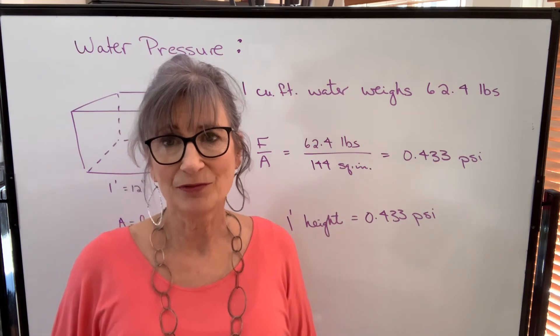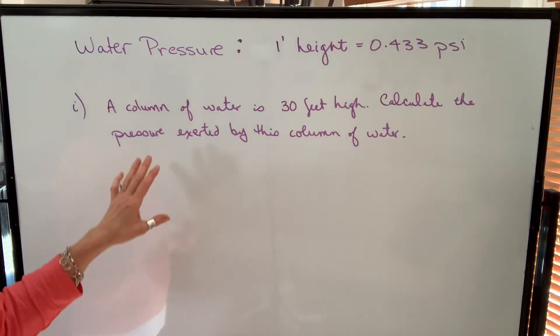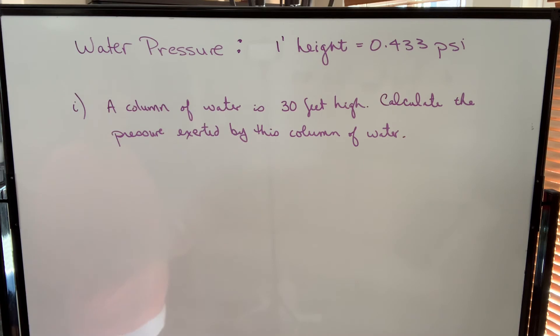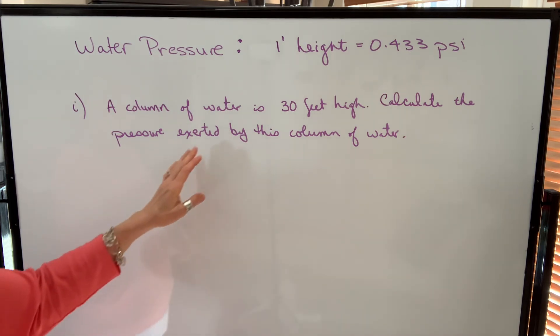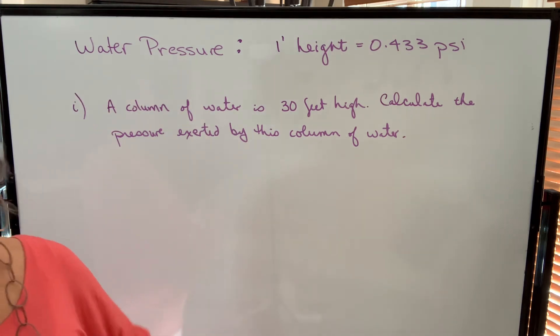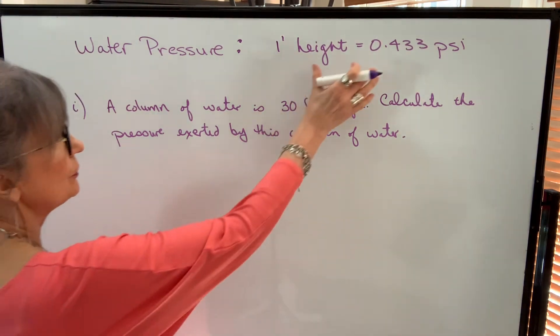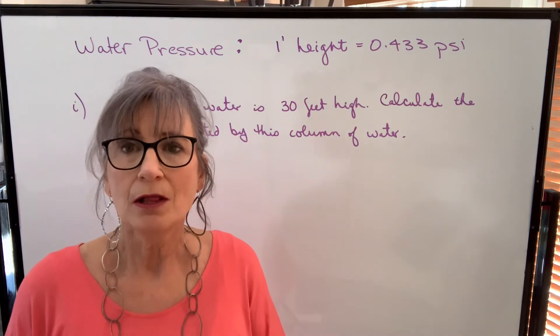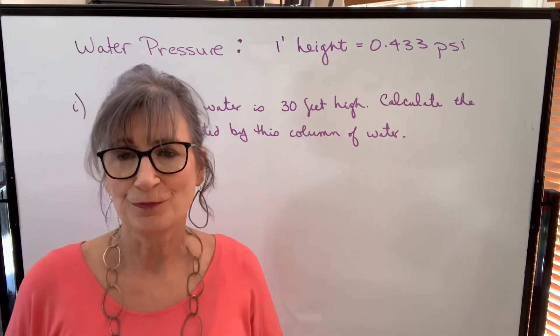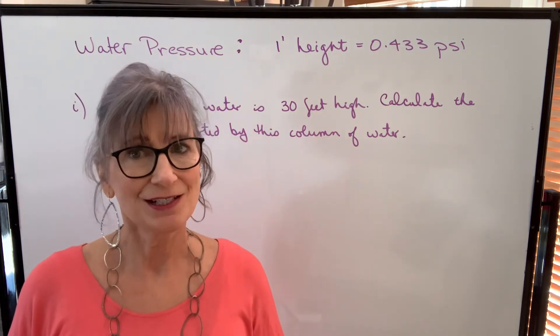Let's take a look at a couple of examples. So if we have a column of water, let's say in a pipe that is 30 feet high, we want to calculate the pressure exerted on the base by this column of water. So I'm going to use direct proportion. Direct proportion works very well. The more height, the more pressure. If I double the height, I double the pressure.